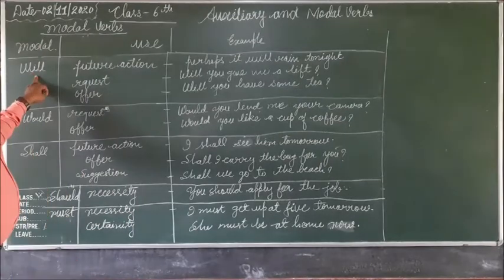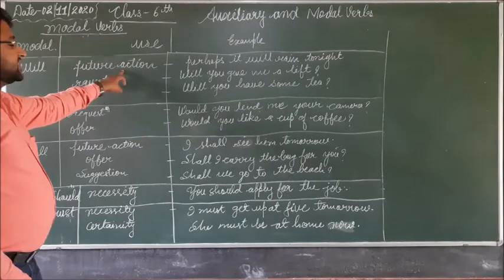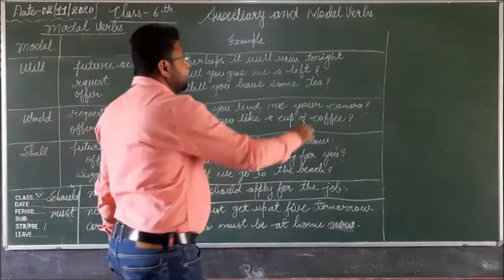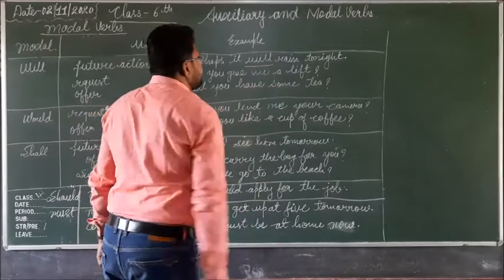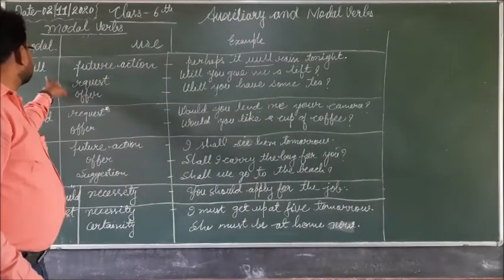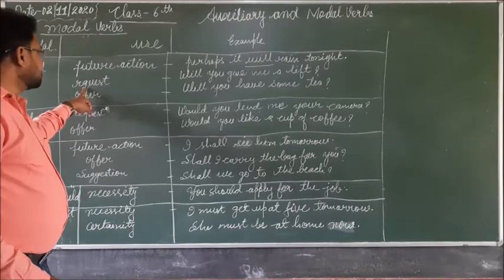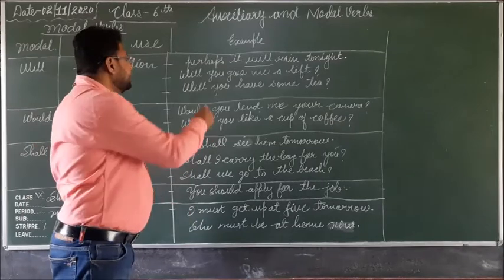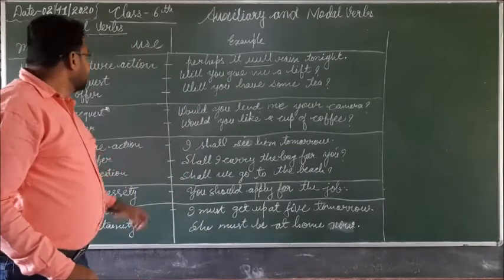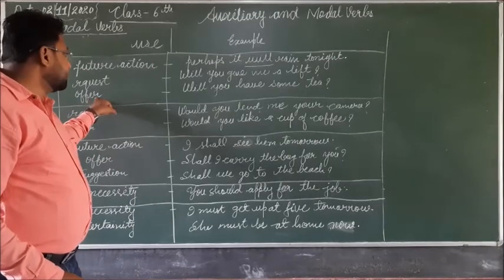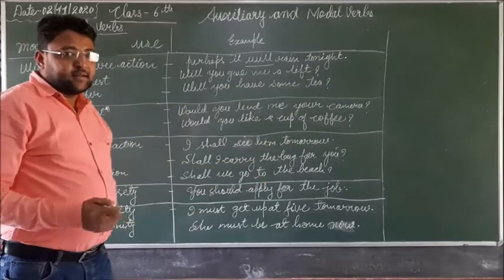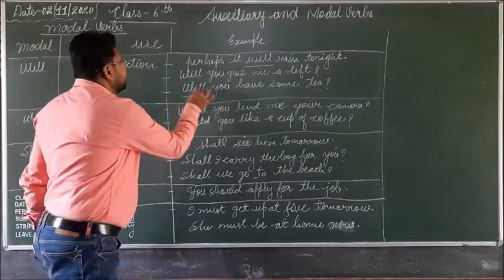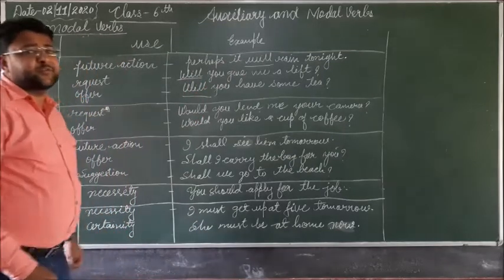Next is 'will'. Will is used to express future action — for example, 'It will rain tonight.' Second use of will is for request: 'Will you give me a lift?' Here someone is requesting. Will is also used for offer: 'Will you have some tea?' Here, will is used to express an offer, a request, and future action.